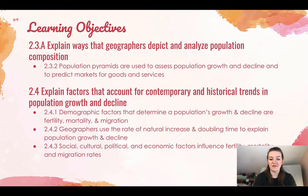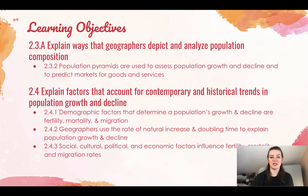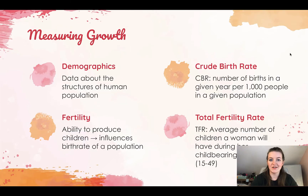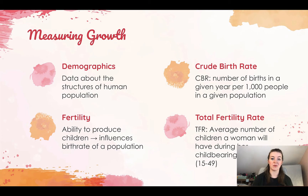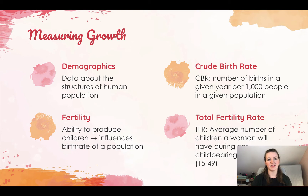We're looking at demographic factors, rates of natural increase and doubling time, and social, political, cultural, and economic factors that influence fertility, mortality, and migration rates. Looking at measuring growth, there are four terms I want you to know. The first is demographics — the data about the structures of human population, things like age, sex, socioeconomic status, ethnicity, and so on.